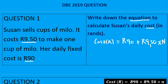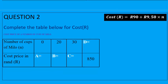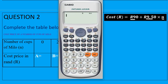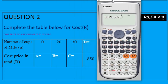In question two, we have to complete the table using the equation from question one. Remember: the fixed cost is R90 and then 9.50 times n. We plug the right-hand side into a calculator as 90 plus 9.50 times n, using brackets to represent n, and then use it to calculate different values.